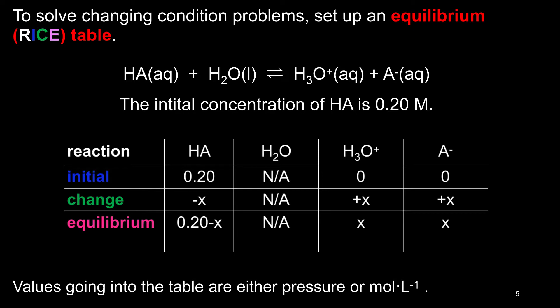Usually, you will be given some initial concentration of the weak acid or base. That molarity goes in the initial row under the weak acid or base. The boxes under the water will have no numbers. You can simply write a line, or N/A.